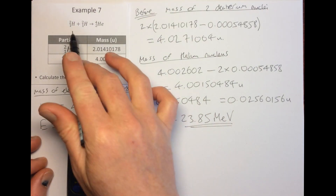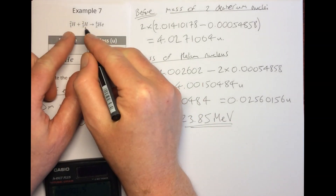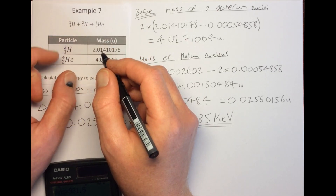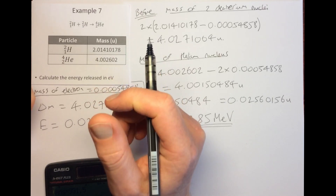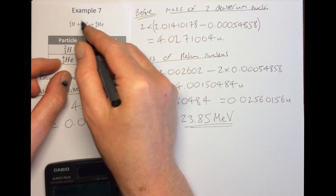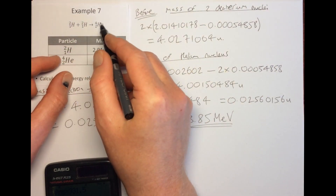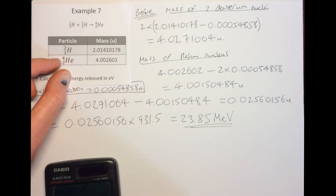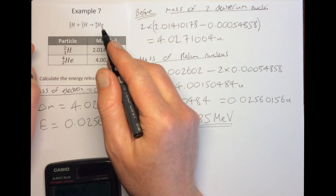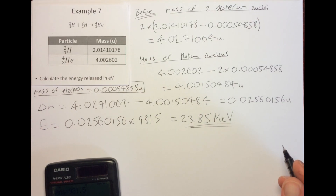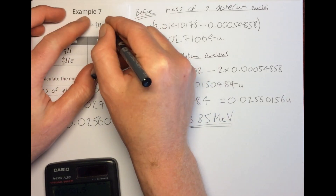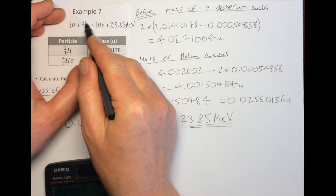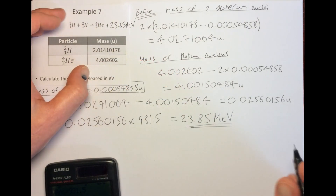These two deuterium nuclei have a greater mass than the helium nucleus. When they combine to make helium, the helium nucleus is more tightly bound — it's in a lower potential energy state than the two deuterium nuclei combined. That means it has lost potential energy, and that energy is released. The helium nucleus has a lower mass than the two nuclei that fused to make it, and that mass has been converted into energy. So you can add to this equation: plus 23.85 MeV.